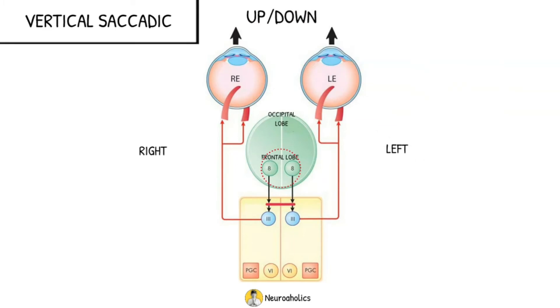If one has to look up or down, impulses travel from both the frontal lobes in area 8. The impulse travels via the basal ganglia to the pre-tectal area, or the pre-tectal center for vertical gaze. This is the vertical gaze center.